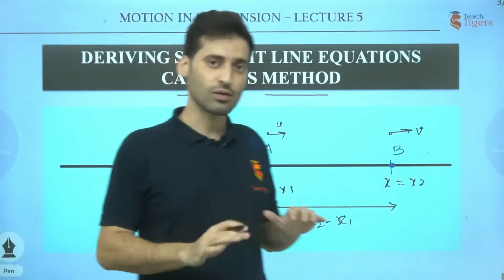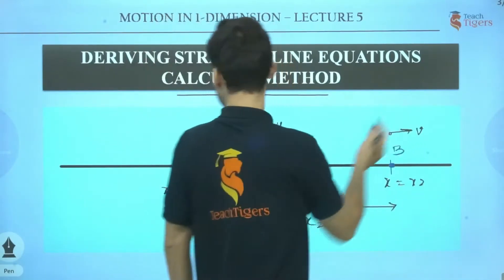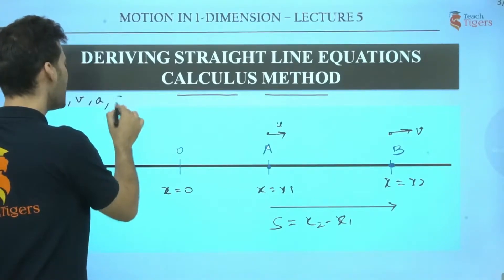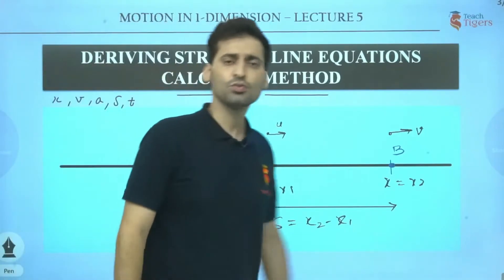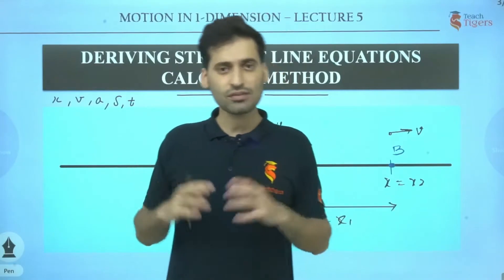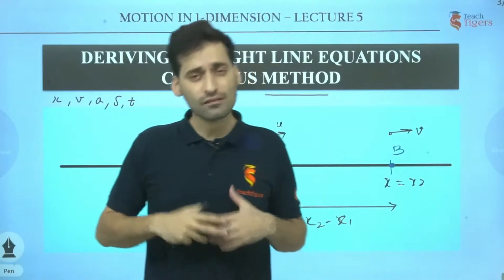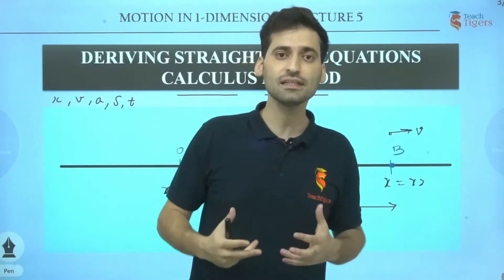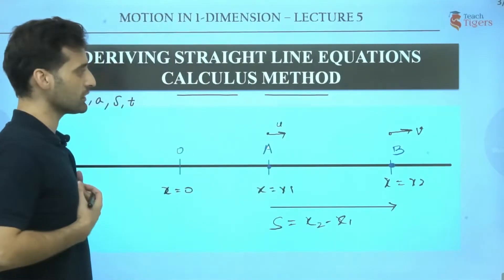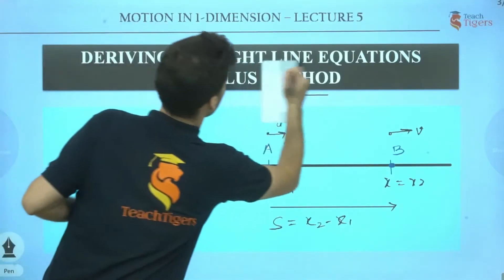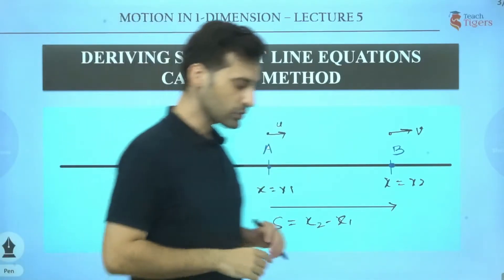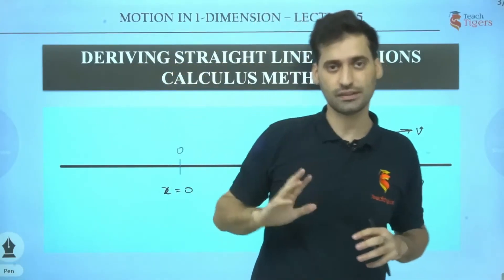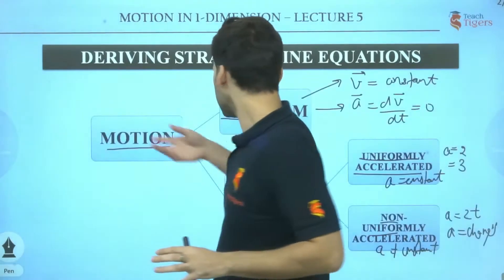We need those relations — we need to know where they come from. That's why it is important to derive them. I am going to derive three straight line equations — three formulas — for all categories of motion. It's my humble request: as I do things, simultaneously take your notebook and pen, and whatever I am doing, try to derive it yourself after pausing the video. Once you derive it yourself, you will understand how it actually works, and solving numericals will become much easier.